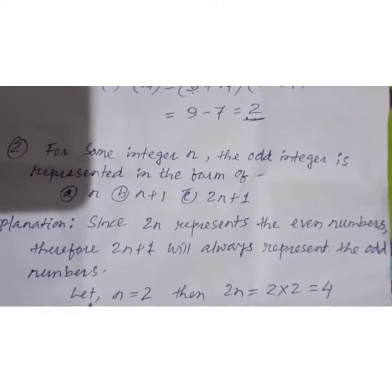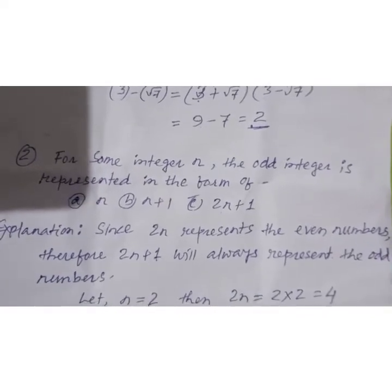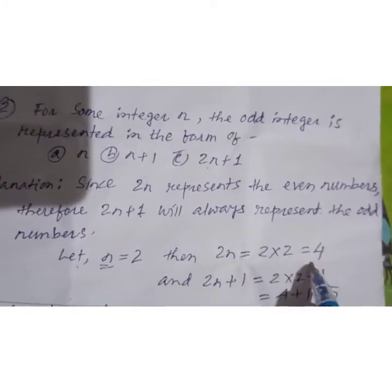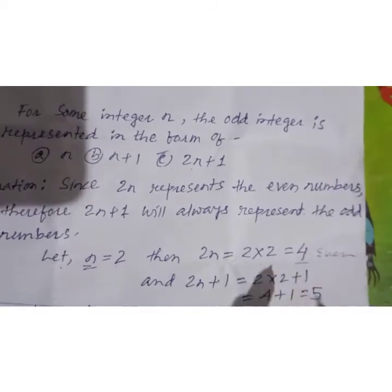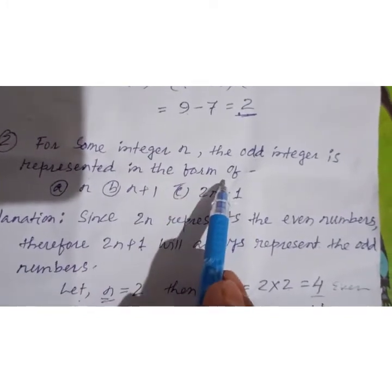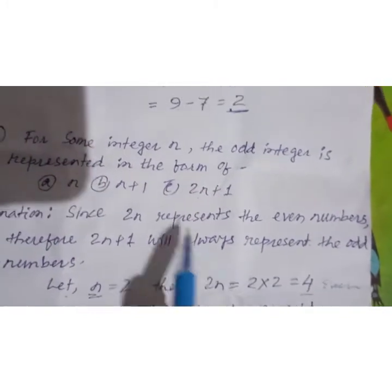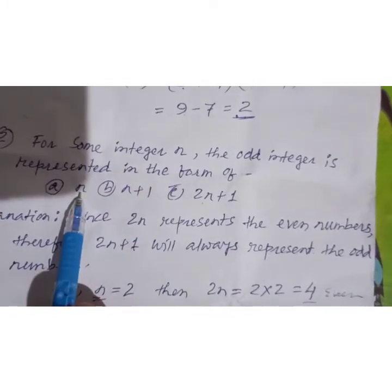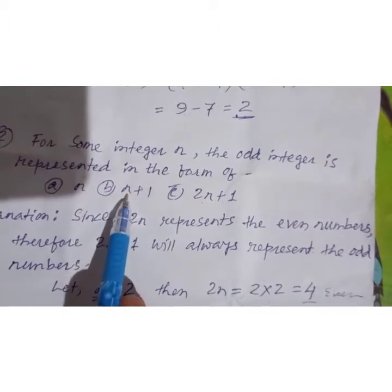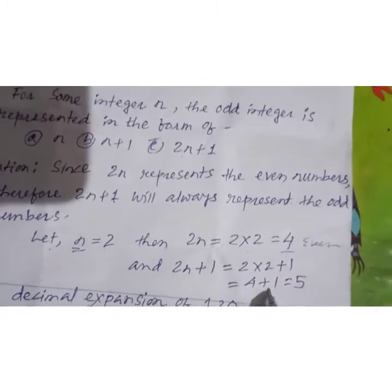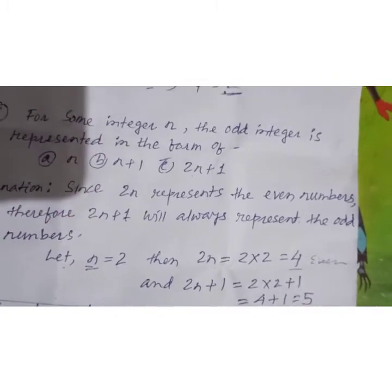To verify: let n equal 2. Then 2n equals 2 into 2, which equals 4 — an even number. So 2n is incorrect for representing an odd integer. Similarly, n and n+1 are also not correct. But 2n+1: if n equals 2, then 2 into 2 plus 1 equals 5, which is an odd number. So 2n+1 is the correct option.